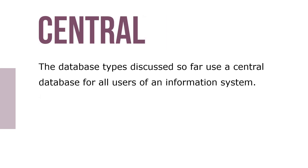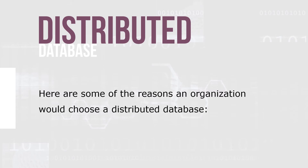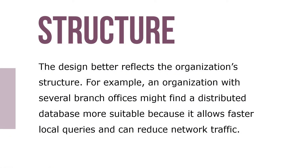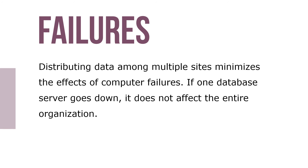The database types discussed so far use central databases for all users of an information system. Here are some reasons an organization would choose a distributed database: the design better reflects the organization structure — for example, an organization with several branch offices might find a distributed database more suitable because it allows faster local queries and can reduce network traffic. Local storage of data decreases response time but increases communication costs. Distributing data among multiple sites minimizes the effects of computer failures; if one database server goes down, it does not affect the entire organization.